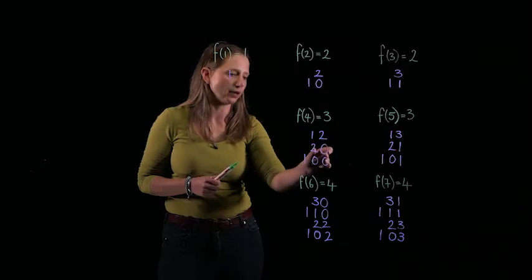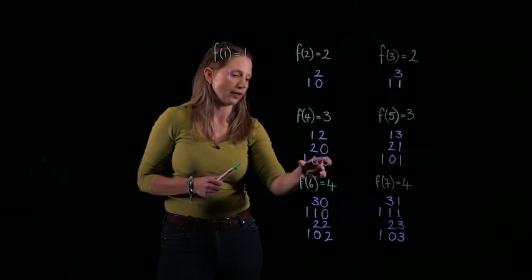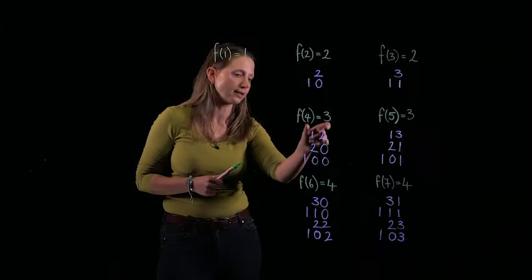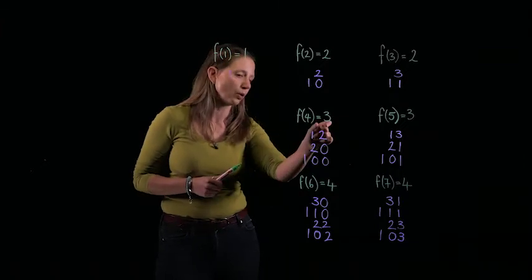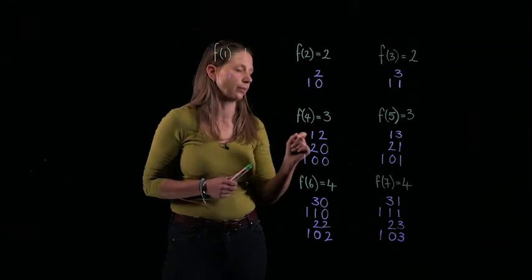So we can definitely increase this 2 into a 3, and it will still be a valid representation. And if I do that, it becomes a representation of 5. Now, if I increase this 0 to a 1, it becomes a different representation of 5. I can always do that. I can take a representation of 4, I will always be able to add 1 into the final column, and that will turn it into a representation of 5.